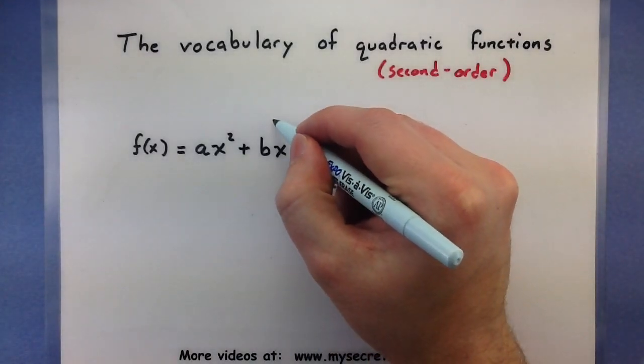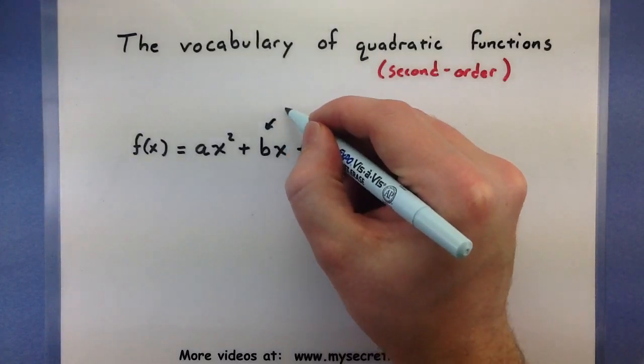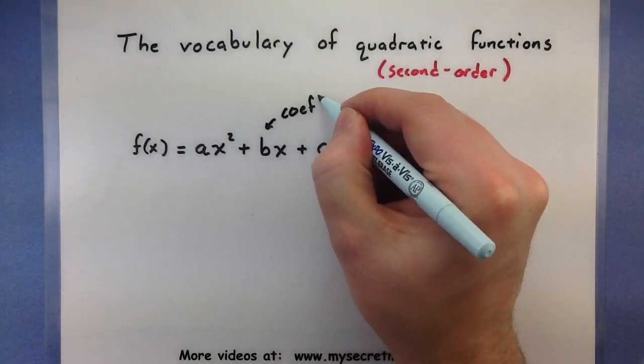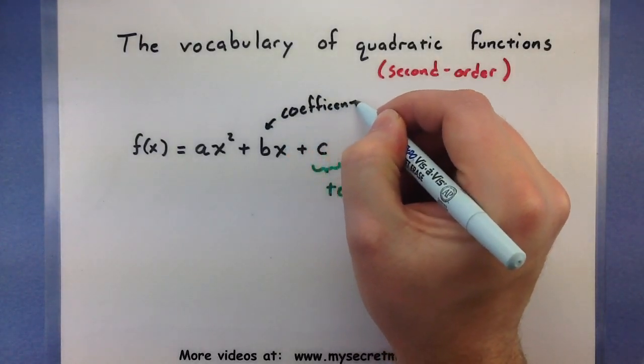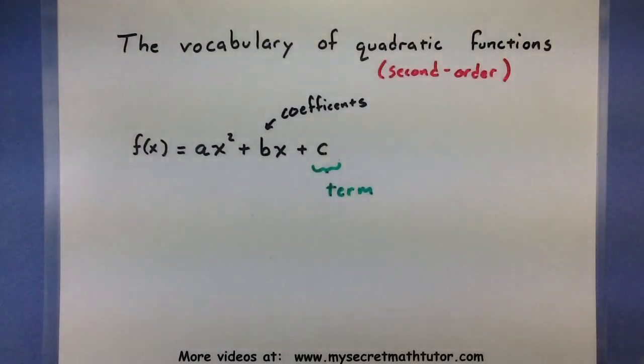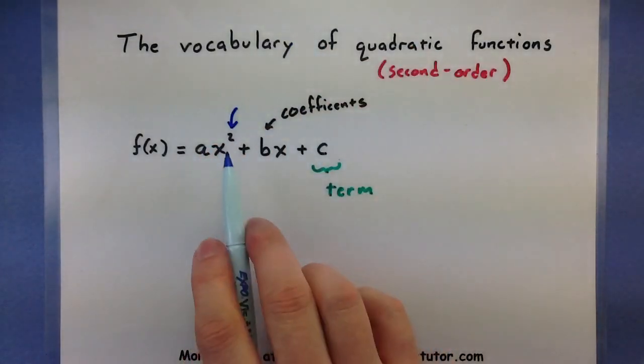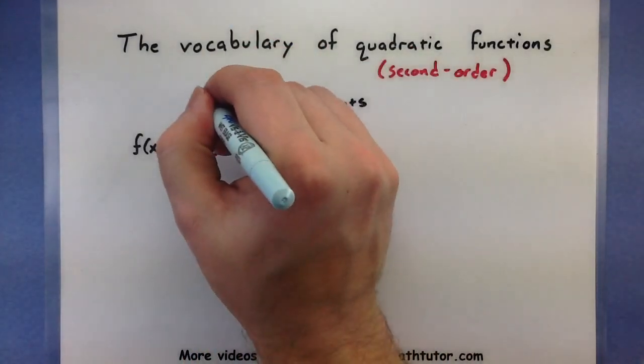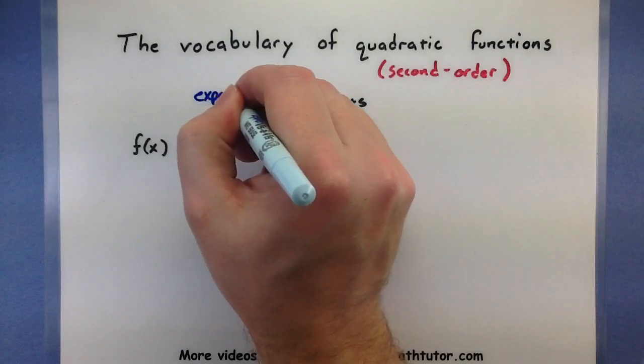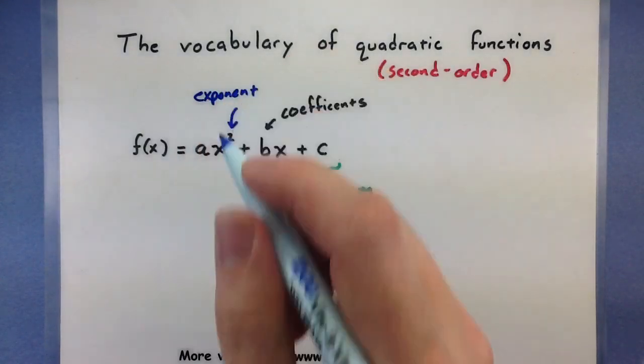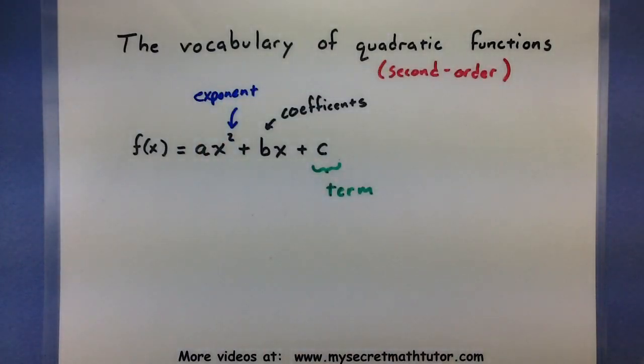In front of our variables we have a few numbers and these are called our coefficients. On the variables we'll have an exponent, and of course the key for being a quadratic is having an exponent of 2.